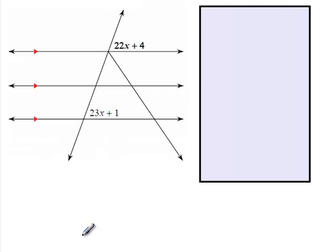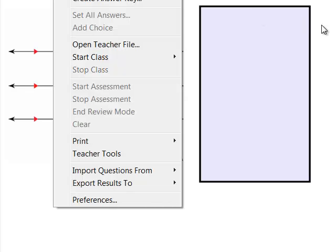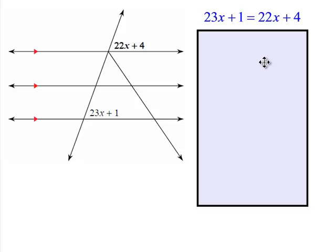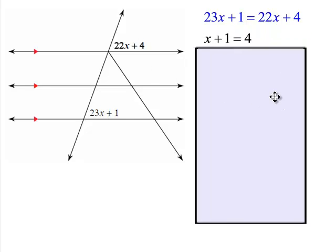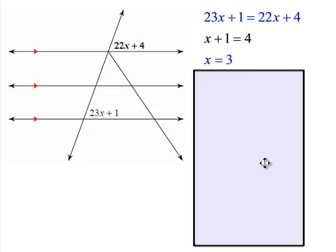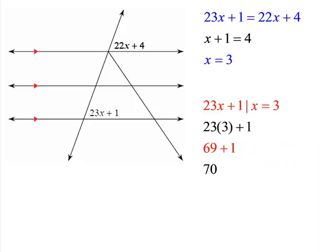These are corresponding angles with parallel lines, so you can say corresponding angles are congruent. Set those two expressions equal to each other and do the algebra — you find that x equals 3. Substitute that back in to find the missing angle: you get 70 degrees. So to fill in the picture: that's 70, this is 70, this is 70, that's 70, which makes the supplementary angles 110, 110, 110, and 110.